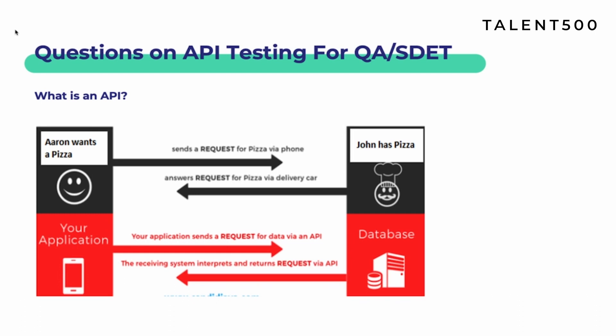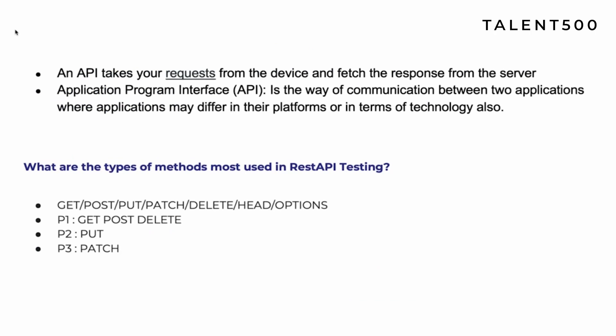A good example is a pizza order: Aaron wants a pizza and sends a request via phone. The pizza gets prepared and delivered back to Aaron. In this case, the delivery car sending the request and bringing back the pizza is basically the work of an API — a middleman between front end and back end. Always keep an example ready; it is always helpful in interviews.